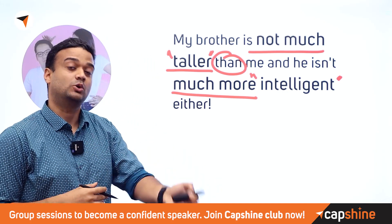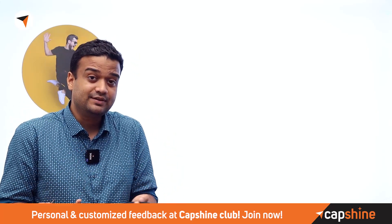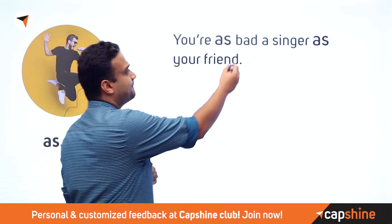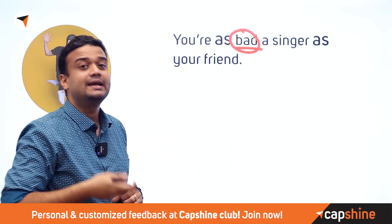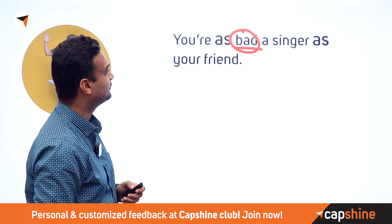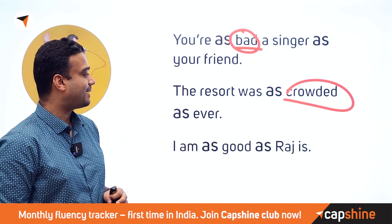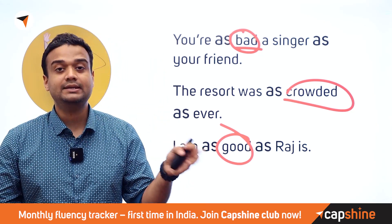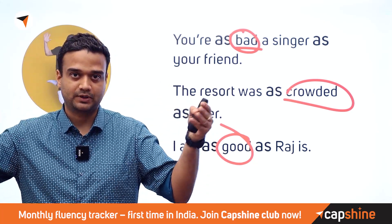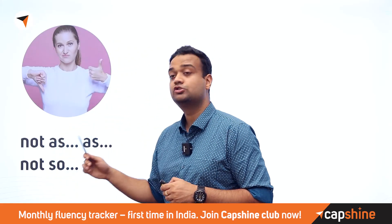You could also use the construction 'as [adjective] as.' This is usually used for actions or behaviors rather than things. For example: 'You're as bad a singer as your friend' — comparing how bad someone is at something, which is a quality, not a thing. 'The resort was as crowded as ever.' 'I am as good as Raj is.' For comparing two qualities, the format 'as [adjective] as' works very well.